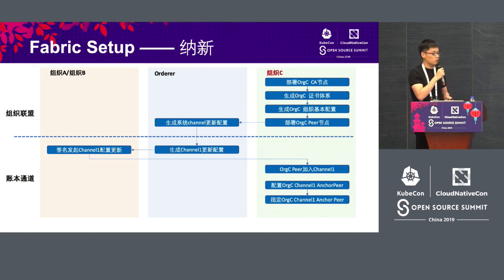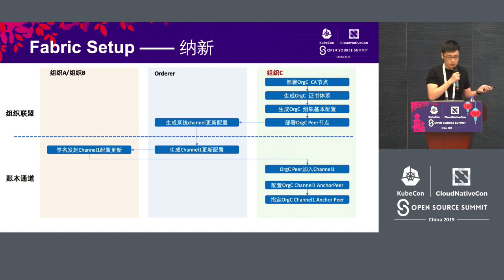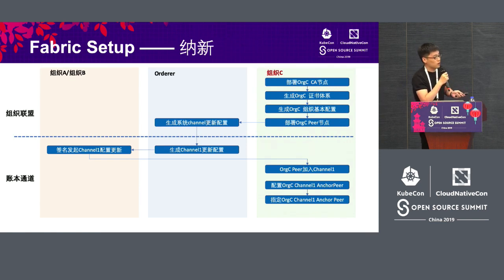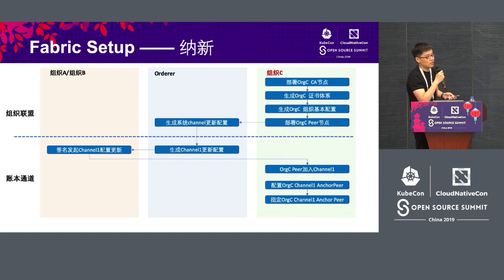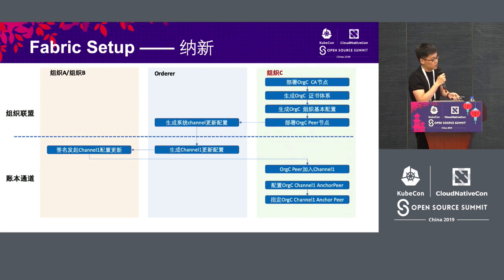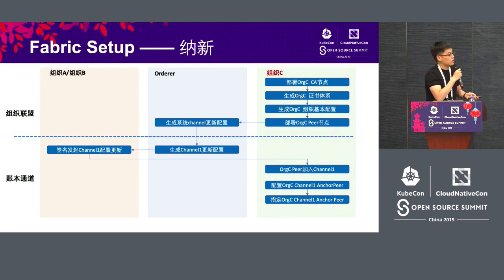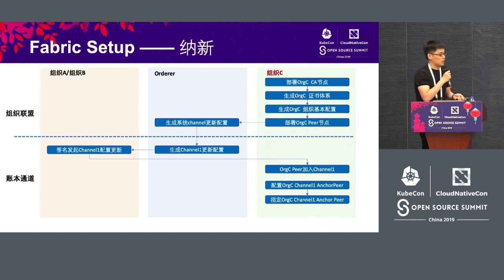Let's look at another scenario: a new organization joining the consortium. A new organization needs to build their CA node and generate a credential system, then generate the basic configuration of the organization, and then update the system channel — organization A and B are already in the channel. The orderer takes organization C's credential document and creates an updated transaction, which needs to be signed by the admin of org A and org B, then sent to the orderer. It will include the configuration of org C, and then org C will be able to start with transactions.